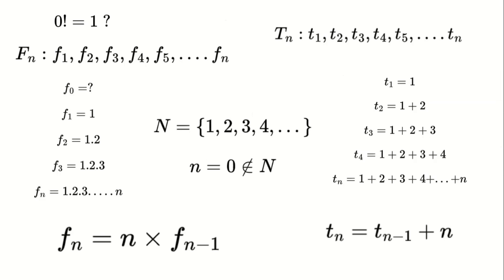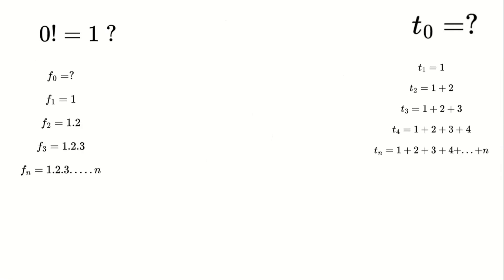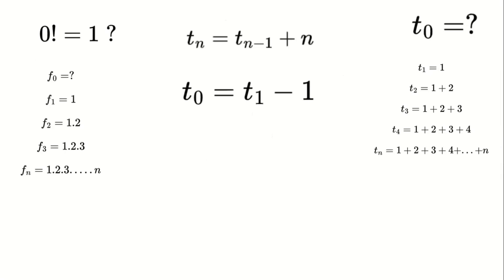Now returning to our question: what is the factorial of 0, or equivalently, the product of 0 natural numbers? Consider the sum of 0 natural numbers, or the 0th triangular number — the method for finding both is the same. Instead of directly substituting 0, we substitute 1 into the general formula. For triangular numbers, putting n as 1 gives us the 0th triangular number as 0. Similarly, for factorials, substituting n as 1 gives us the factorial of 0 as 1.